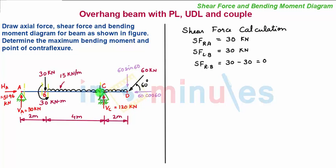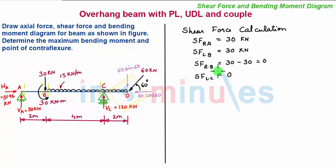Now we take a section towards the left of C and very near to it. The shear force towards the left of C: the only addition of force between these two sections is the UDL of intensity 15 kN/m acting over a span of 4 meters. The shear force towards the right of B is zero, minus 15 multiplied by 4, since the downward force on the left-hand side is negative. This gives a value of minus 60 kN.